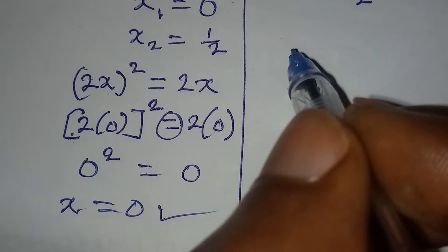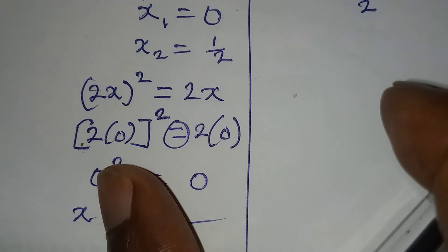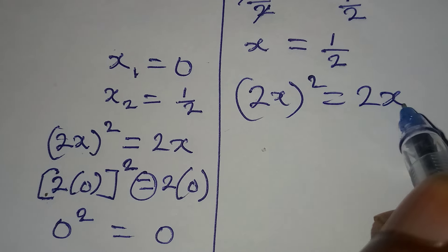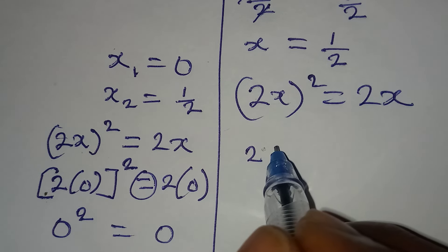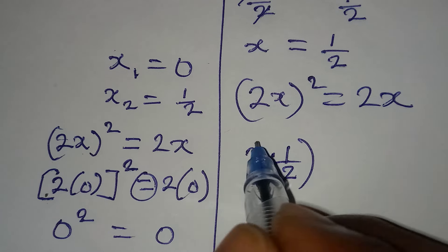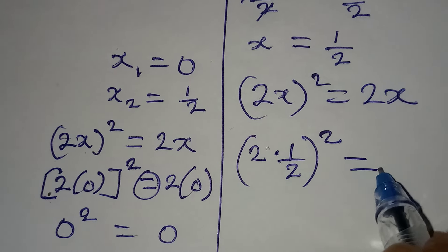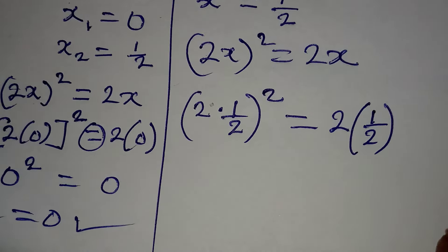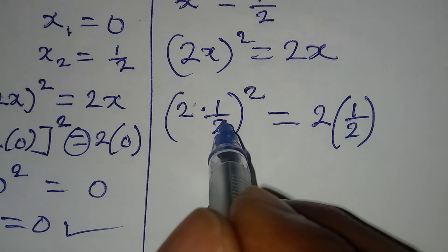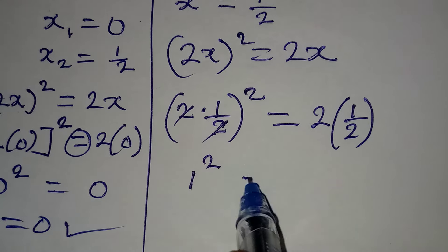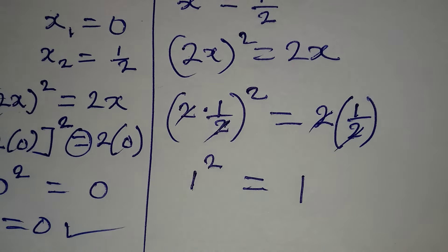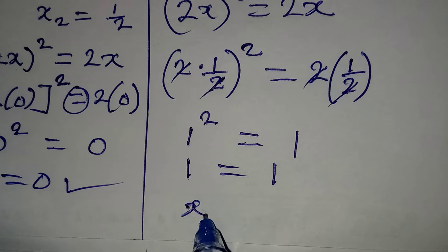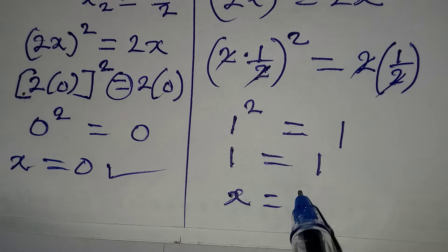Now let's verify x equals 1/2. The original equation is 2x squared equals 2x. Substituting: 2 times 1/2, all squared, equals 2 times 1/2. The 2 and 1/2 cancel on the left giving 1 squared, and cancel on the right giving 1. Since 1 squared equals 1, both sides equal 1, so x equals 1/2 also satisfies the equation.